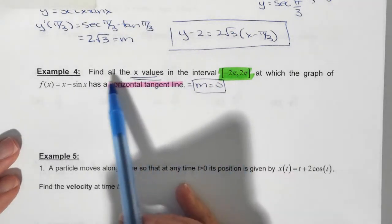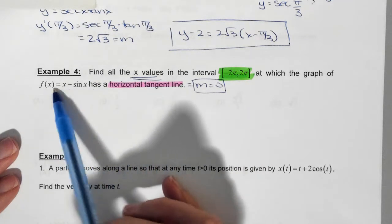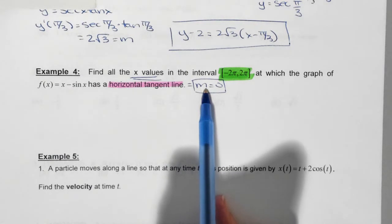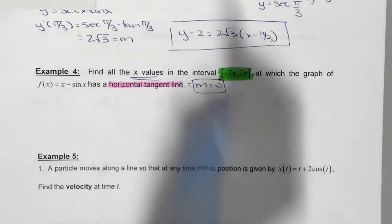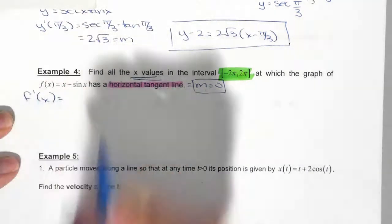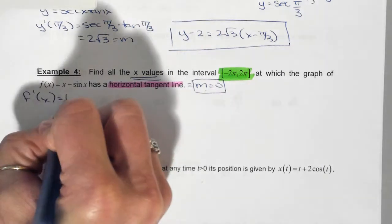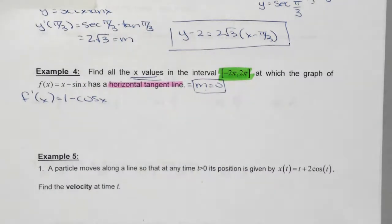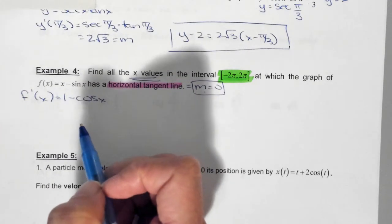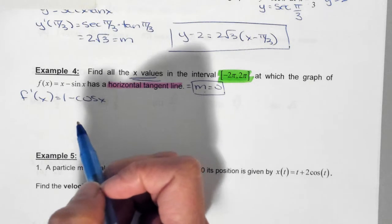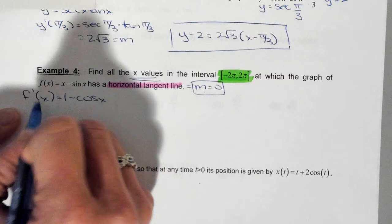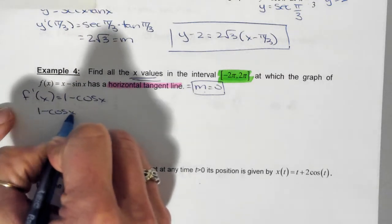So we need to find all x values where we have a horizontal tangent line to this function, which means where the slope is zero. As soon as you know you need to calculate the slope, what does that mean you're going to have to do? Take the derivative. So we have f prime of x is equal to? One minus cosine. One minus cosine of x. This function represents how we could find the slope. But don't we know what the slope is equal to? Yes. So can I set this equal to zero? So we have one minus the cosine of x is equal to zero. Add cosine.